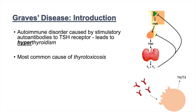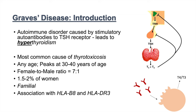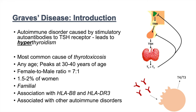Graves' disease is the most common cause of thyrotoxicosis — a condition with very high levels of thyroid hormones leading to specific consequences. It can occur at any age but generally peaks between 30 and 40 years. Females outnumber males 7 to 1, and about 1.5 to 2% of women will get Graves' disease. There is a familial predisposition with associations to genes HLA-B8 and HLA-DR3, as well as associations with other autoimmune disorders.